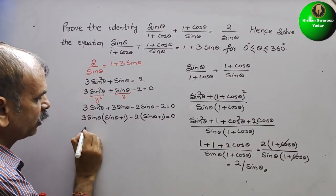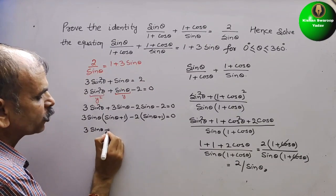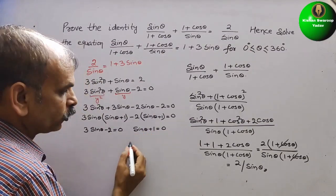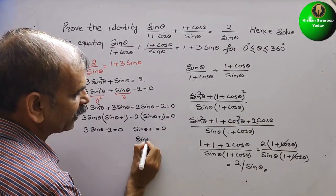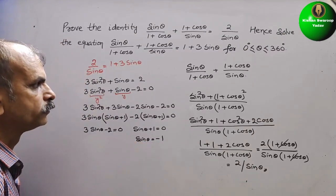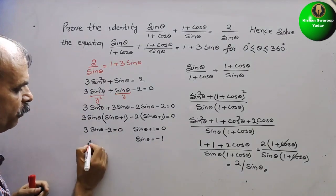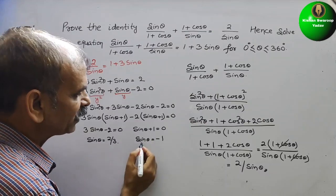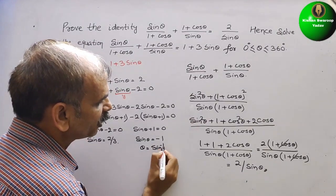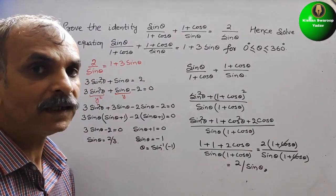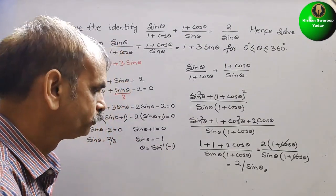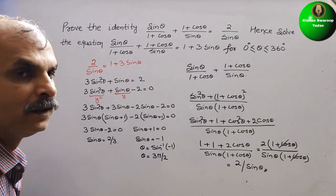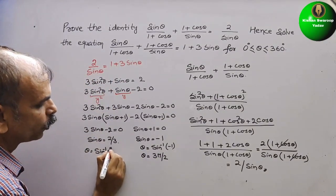The two factors are (3sinθ − 2) = 0 and (sinθ + 1) = 0. From the second factor, sinθ = −1, which gives θ = 270° (i.e., 3π/2). From the first factor, sinθ = 2/3, so θ = sin⁻¹(2/3).